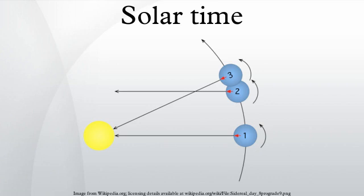Solar time is a reckoning of the passage of time based on the sun's position in the sky. The fundamental unit of solar time is the day. Two types of solar time are apparent solar time and mean solar time.